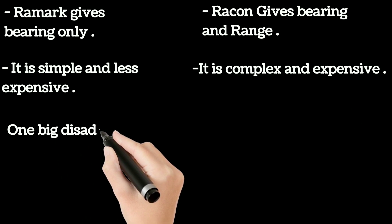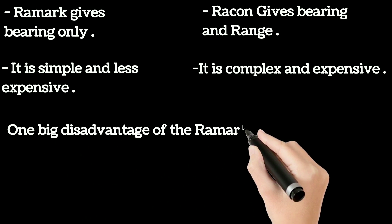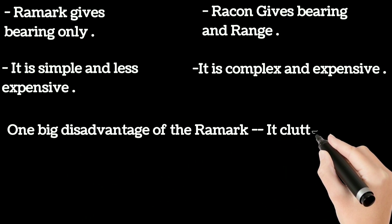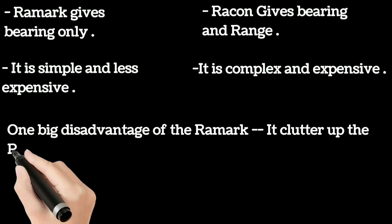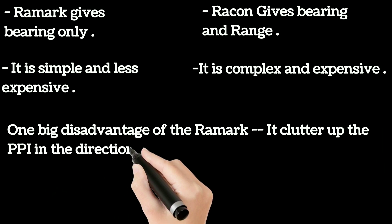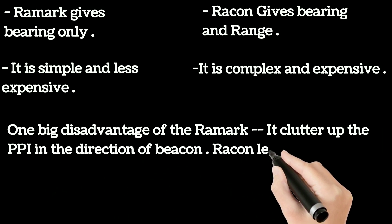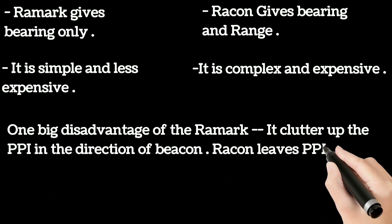One of the big disadvantages of RAMARC is that it clutters up the PPI of the radar in the direction of the beacon, whereas RACON leaves the PPI clear from the center.